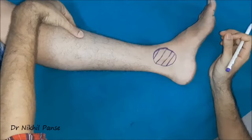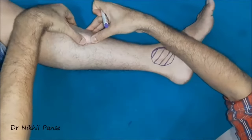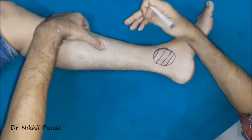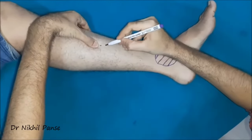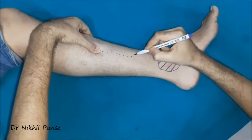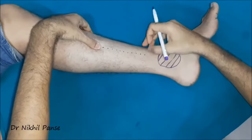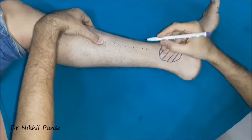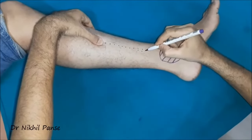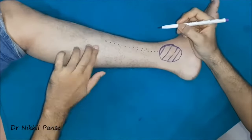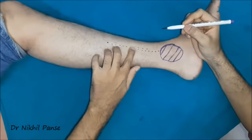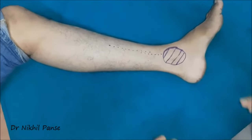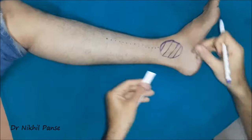As always, any planning begins with marking of the important relevant anatomical landmarks. Here we are marking the medial subcutaneous border of the tibia, so that our incisions and flap markings don't encroach on the tibia.